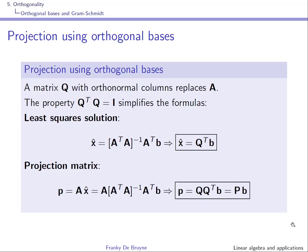We like matrices with the property Q transpose Q equals the identity because they are easy to work with. If A were an orthogonal matrix, then plugging into the least squares solution simplifies things considerably, and the projection matrix becomes simply Q times Q transpose. In general you never have this property, so what we'll do is decompose A using Q times R, where Q is orthogonal and R is upper triangular, which also leads to simplifications.